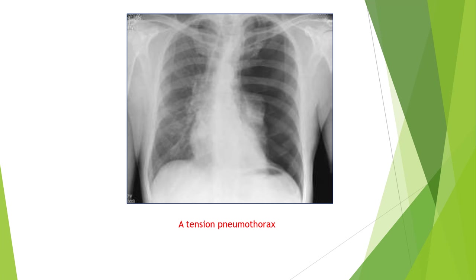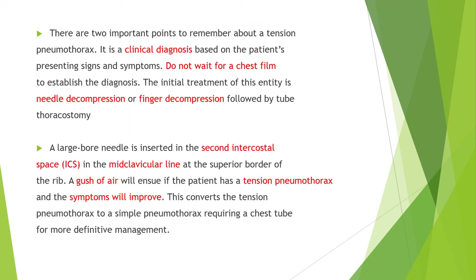This is an X-ray of left-sided tension pneumothorax. There are two important points to remember: it is a clinical diagnosis based on the patient's presenting signs and symptoms — do not wait for a chest film to establish the diagnosis. The initial treatment is needle decompression or finger decompression followed by tube thoracostomy. A large over-needle is inserted in the second intercostal space in the mid-clavicular line at the superior border of the rib to prevent injury to neurovascular structures. A rush of air will ensue if tension pneumothorax is present, converting it to a simple pneumothorax requiring a chest tube for definitive management.